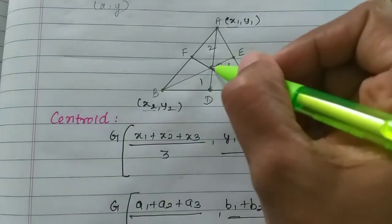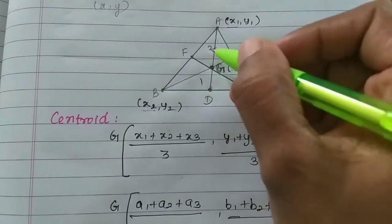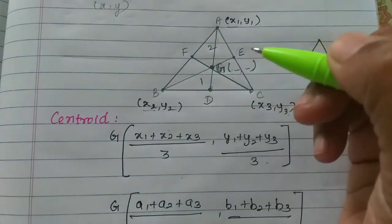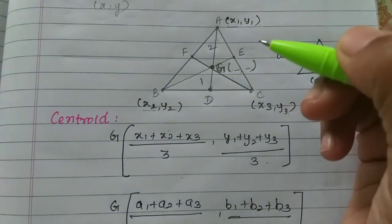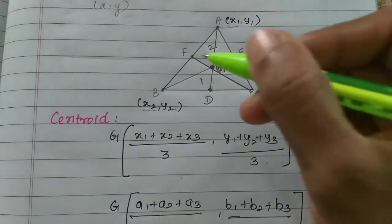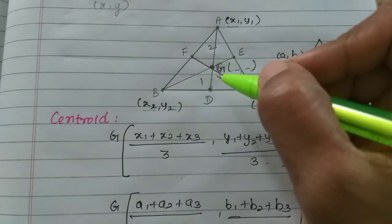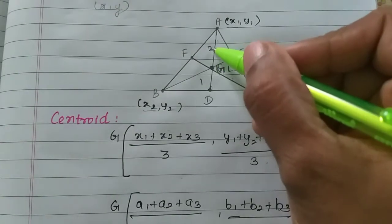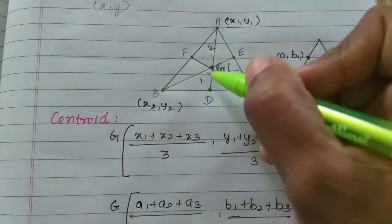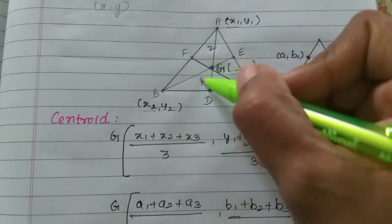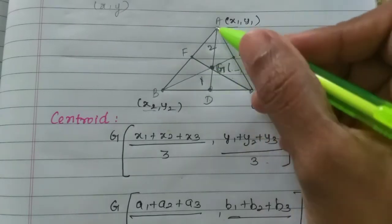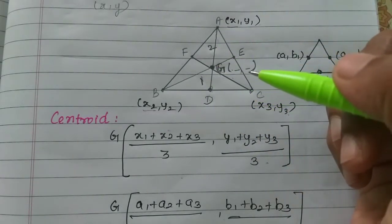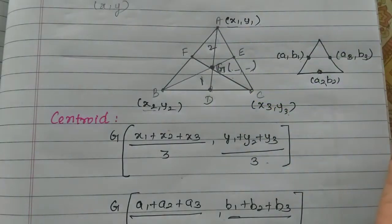The centroid divides the median in a 2 to 1 ratio. So that means the sum is split: 2 is to 1. That ratio applies to the centroid on the median.